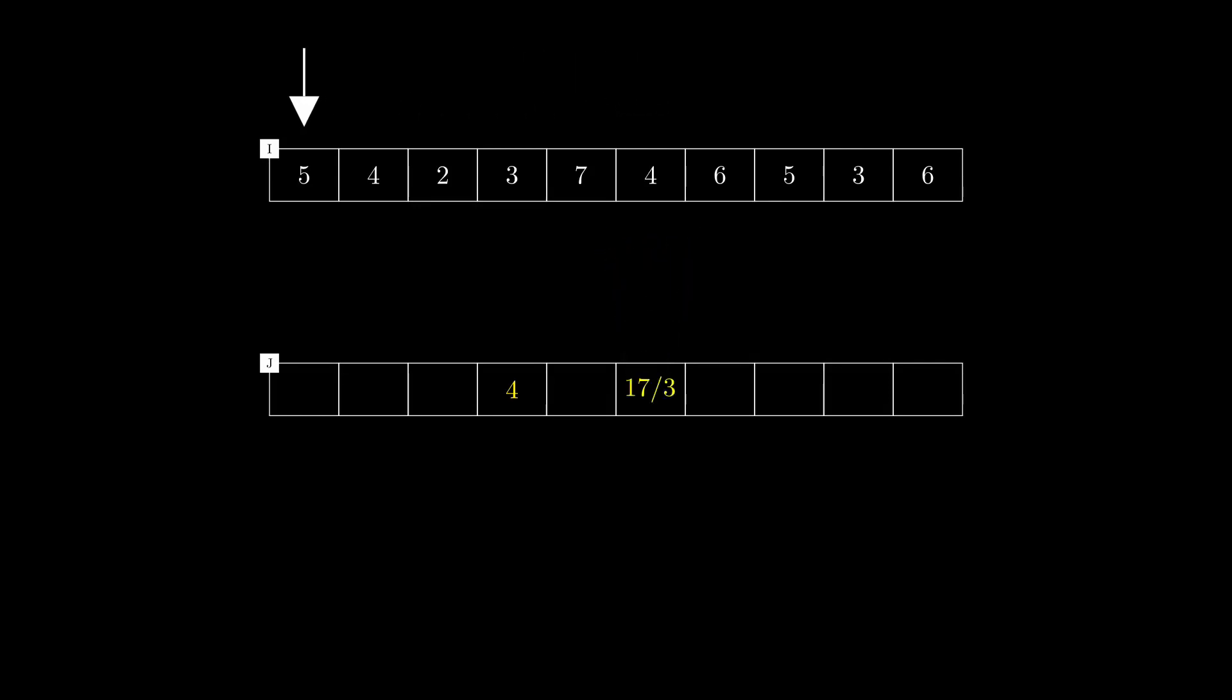But what if we want to take this averaging for the first entry? You see, it only has one neighbor. The other neighbor is missing, the one on the left. The remedy for this problem is to imagine the presence of that missing neighbor. For example, we could say that the missing neighbor most likely is same as the current entry. We then say that we have padded our vector or one-dimensional image using the same method.